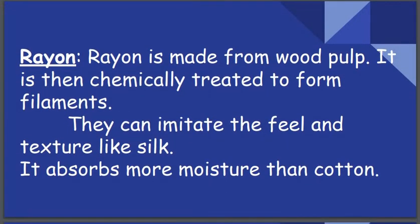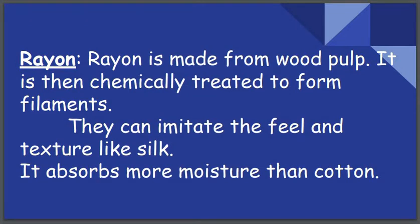The first type of fiber we are going to see is rayon, which is called a semi-synthetic fiber because it is made from wood pulp. The wood is chopped into small pieces, pressed and made soft, and then this wood pulp is chemically treated to form rayon filaments. They look like silk and behave like cotton — they can imitate the feel and texture of silk, and they absorb more moisture than cotton.